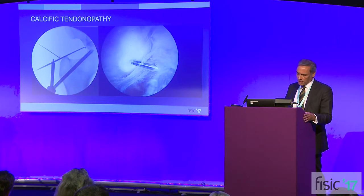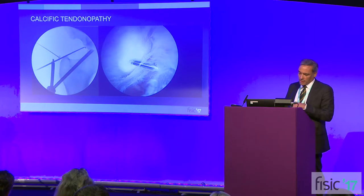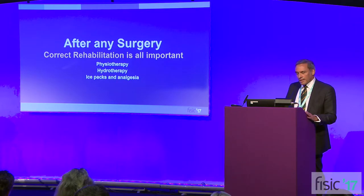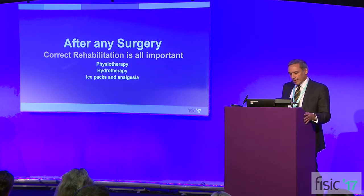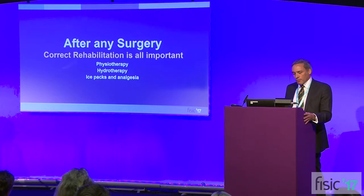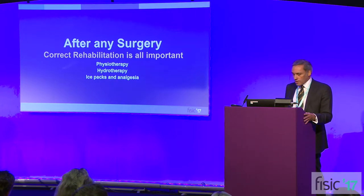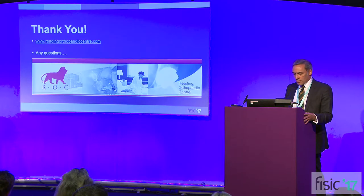Calcific tendinopathy looks like this under fluoroscopy — and that's what it looks like when you look inside with an arthroscope, so we can remove that. Like with any surgery, it's really important that after the operation you have the correct rehabilitation, because that's really what's going to give you the good results. You need good physio, good hydro, remember your ice packs and analgesia, because that's the recipe for success.